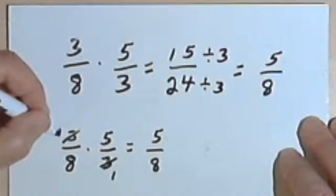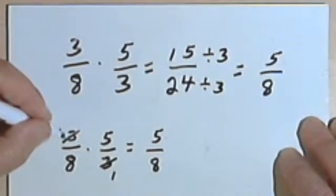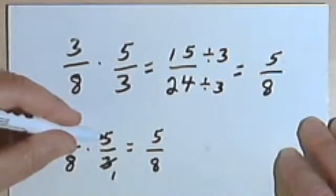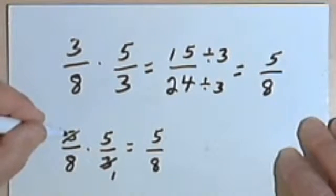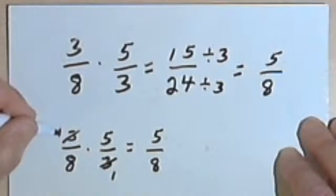Remember, when you cross them out, you get a 1. Don't think that you end up with 0, otherwise we'd have 0 times 5. Sometimes we forget to write the 1 in, but crossing it out still means you're dividing 3 by 3 and you're getting a 1.